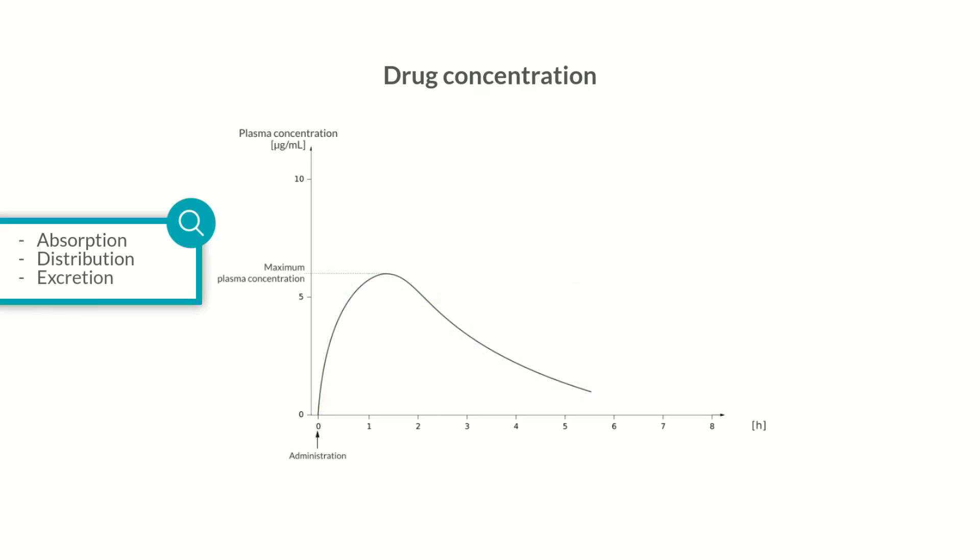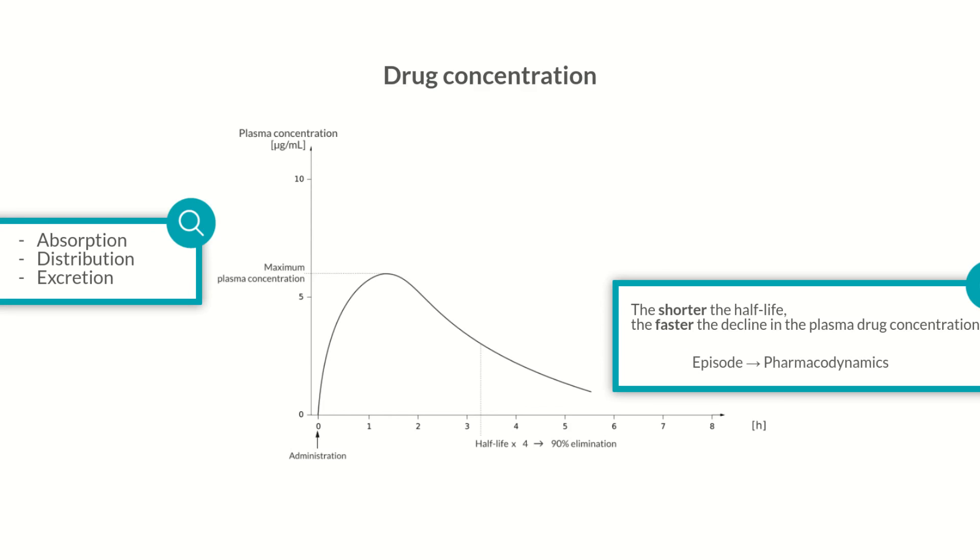This is best described by the biological half-life. It indicates the length of time required until the plasma drug concentration reaches half of its maximum. The half-life is of therapeutic importance. The shorter the half-life, the faster the decline in the plasma drug concentration. After four half-lives, approximately 90% of the drug is eliminated. The relationship between concentration and the effect of a drug will be discussed in our Chalk Talk episode on pharmacodynamics. But for starters, the half-life and the duration of the effect don't necessarily correlate with one another.